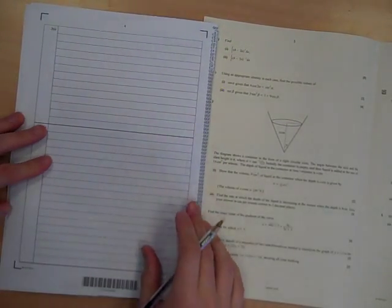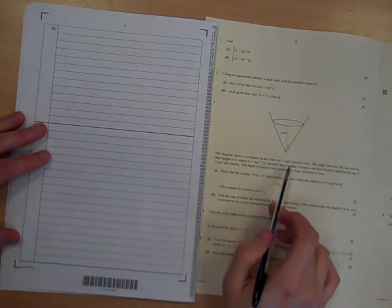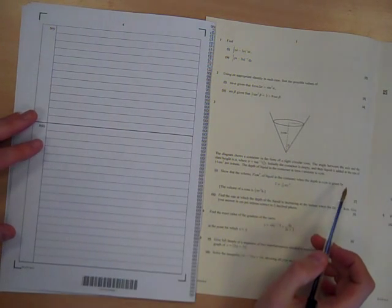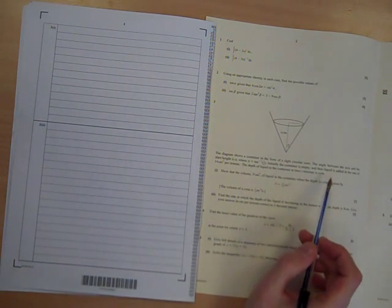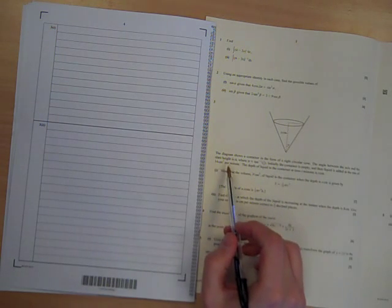OK, question 3. We've got a container in the form of a right circular cone. The angle between the axis and the slant height is alpha, where tan alpha is a half. It's empty. The liquid is added at 14 centimeters cubed a minute.